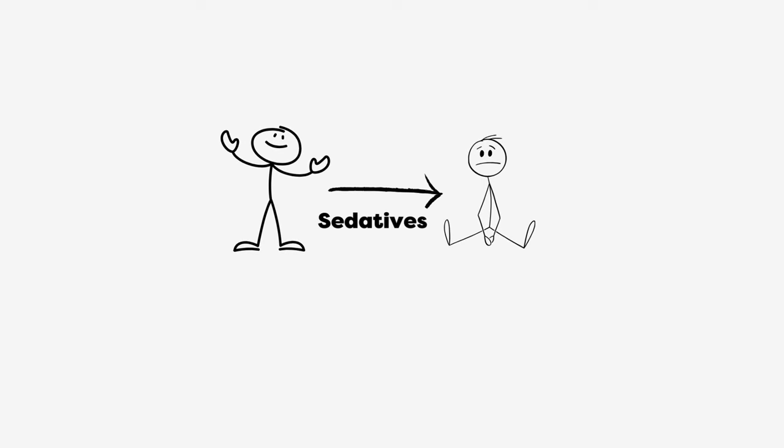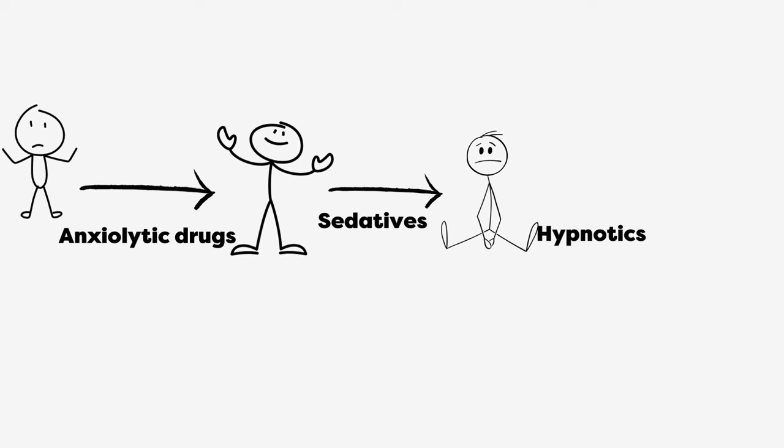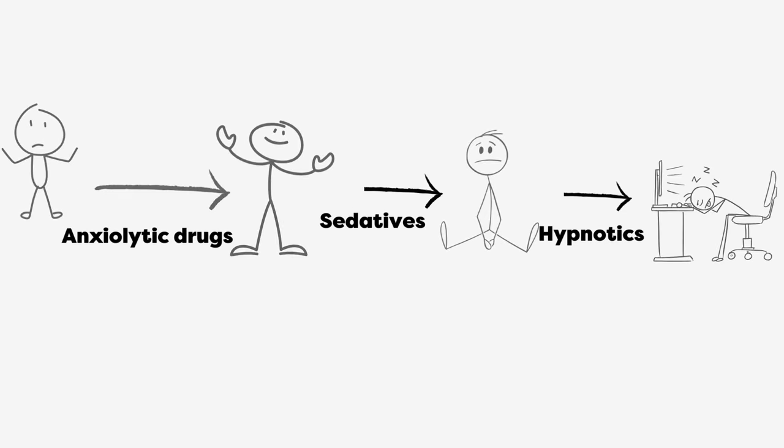Next, anxiolytic drugs reduce anxiety and will be discussed along with antidepressant drugs. Third come hypnotics, also known as sleeping pills. These are psychoactive drugs that induce sleep. Now coming towards the classification, there are five different classes of drugs.